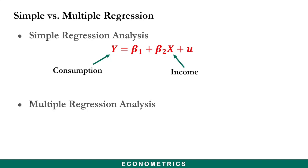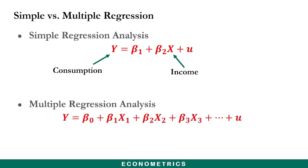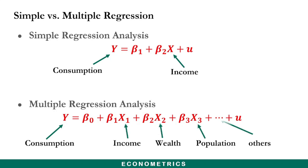In multiple regression analysis, we are looking at one dependent variable against two or more independent variables. An econometric model exemplifying this case is shown on the screen, where the dependent variable can be consumption and the independent variables can be income, wealth, population, and others. So in this case we are simply looking at how two or more independent variables affect the dependent variable.